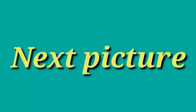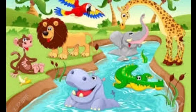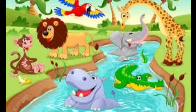Come to the next picture. What do you see in this picture? In this picture, we can see that there is a picture of a forest. And there are so many wild animals. Some are in water while some are on land. I can see a lion, a monkey, a hippopotamus, a crocodile, an elephant, a zebra and a parrot.